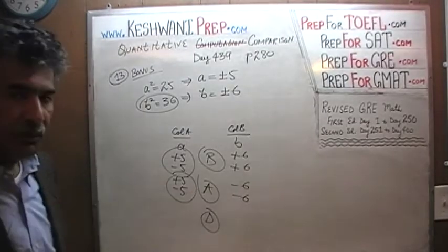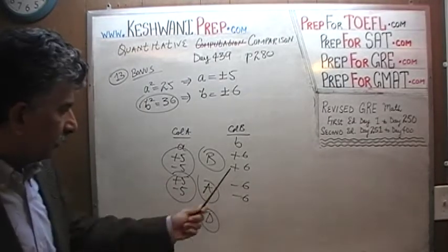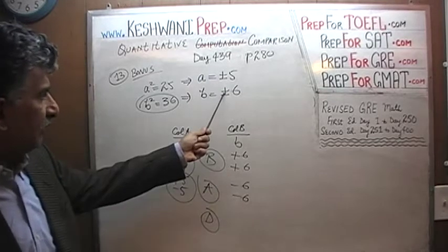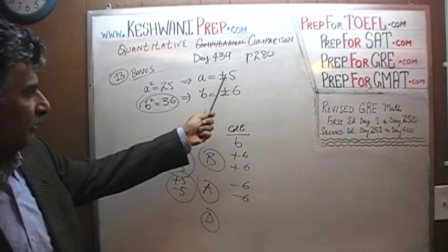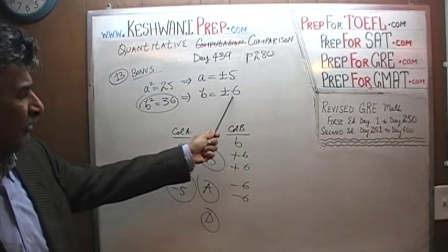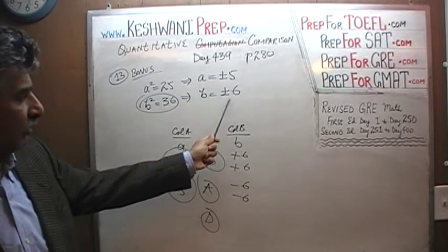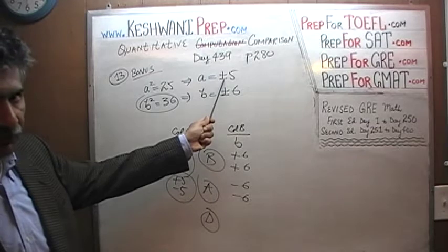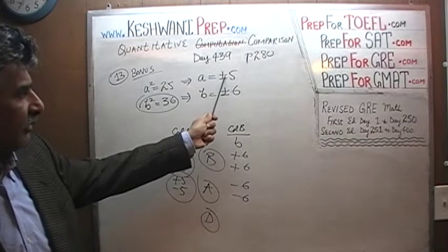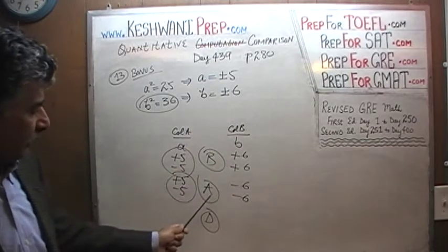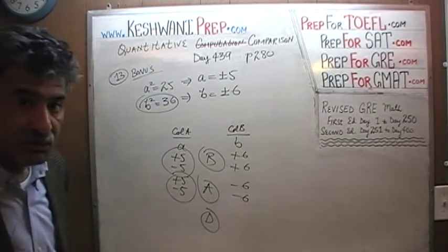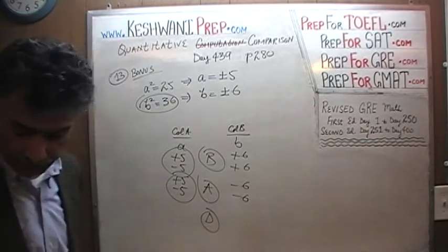We don't know what we are comparing with what. Maybe b is positive 6, and then positive 6 will always be more than positive 5 or negative 5 — the answer would be b. But if b happens to be negative 6, then it doesn't matter whether a is positive 5 or negative 5. In both cases, quantity a would be bigger. Since we do not know which scenario we are dealing with, the answer is D.